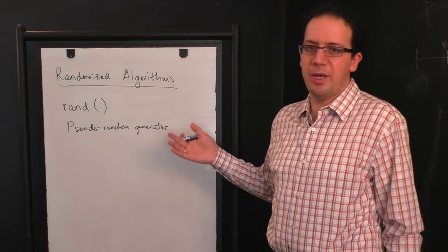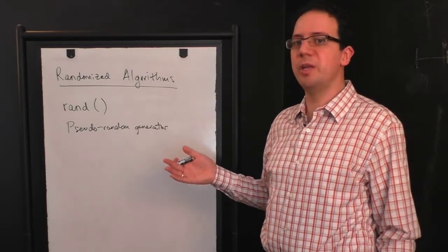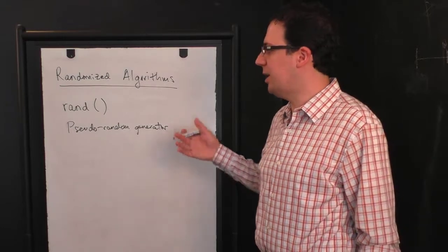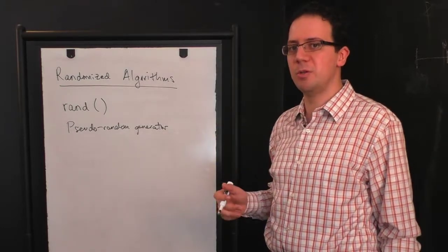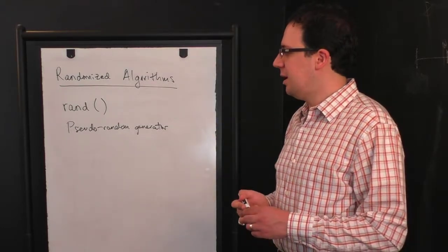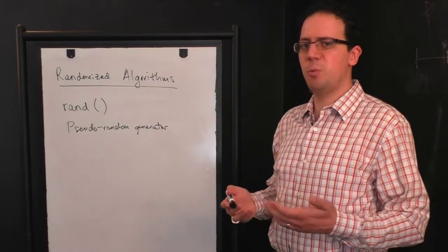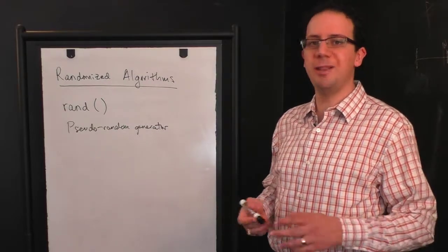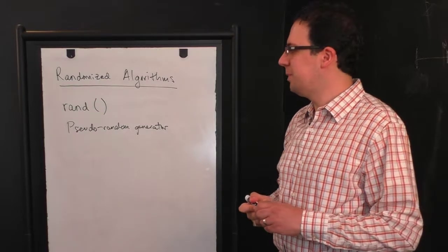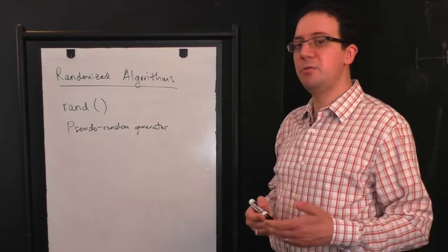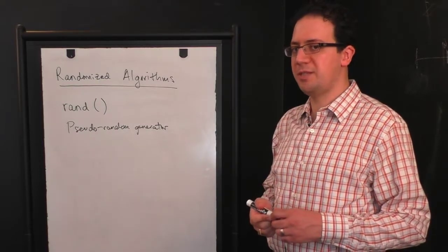In theory, you could ask, okay, is this legitimate? Do we really need randomness? Or can we actually get away with pseudorandom generators all the time? The conjecture, which is widely believed, but let's say not quite as widely believed as p not equal np, is that in fact you don't need randomness for most tasks in a computer.